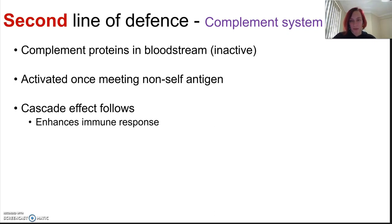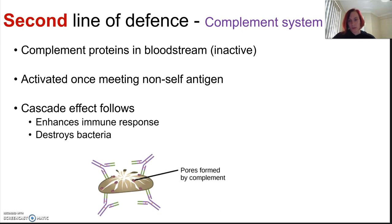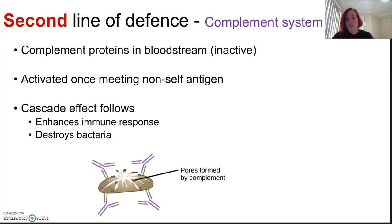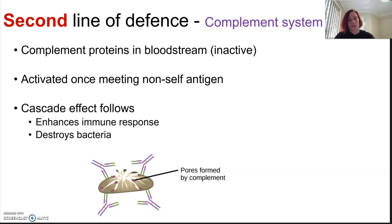In this cascade, one activated protein stimulates the activation of all the others and can produce a huge range of effects. It can enhance the immune response and bring in other leukocytes through leukocyte recruitment. It can actually destroy bacteria straight away, and it can form attack complexes to destroy bacteria by lysing them — bursting them open — which in turn attracts more phagocytes to the scene. It can also increase the permeability of blood vessels to increase inflammatory response processes.